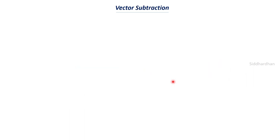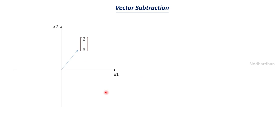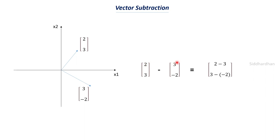Now let's discuss vector subtraction using the same two vectors: 2,3 and 3,−2. Similar to addition, both vectors must have the same shape and it is element-wise subtraction: 2−3=−1 and 3−(−2)=5, giving resultant vector −1,5. An important note: when you add two vectors you get a vector, not a scalar, and the same applies to subtraction — the resultant is always a vector.